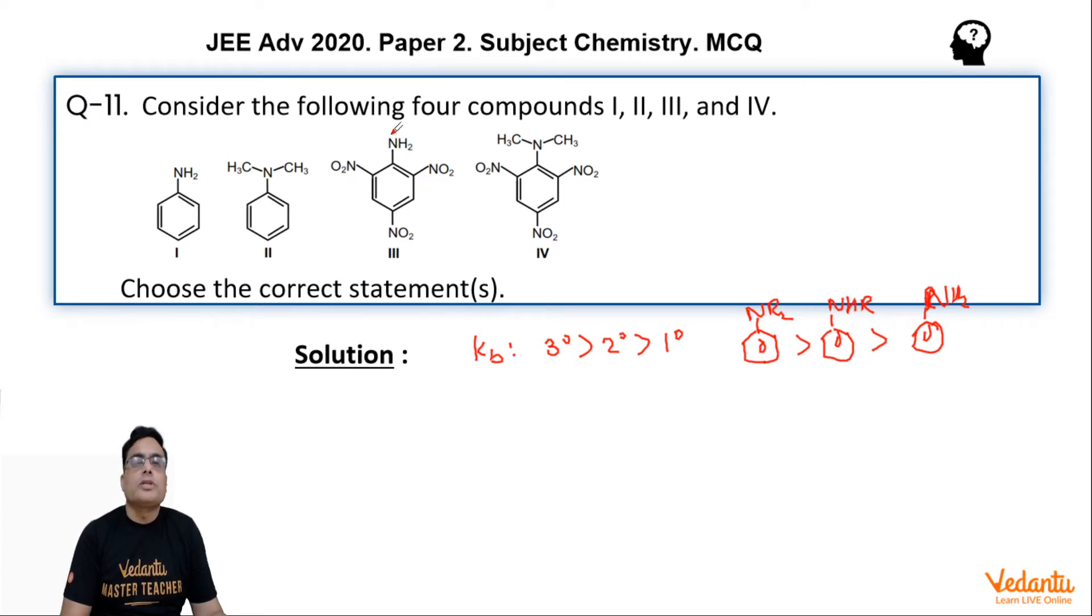In the presence of nitro group, this structure number III is least basic. Why? Because one thing is, if I draw structure number III here, it is a primary aromatic amine. And in addition to that, this is having three strong -M groups, that means strong electron withdrawing groups. And these three nitro groups, which are very strong electron withdrawing groups, will make the basic strength so less that overall,